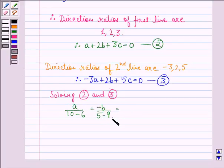This is minus B upon 5 minus 9, which is equal to C upon 2 minus 6. This implies A upon 4 is equal to minus B upon minus 4 is equal to C upon minus 4.